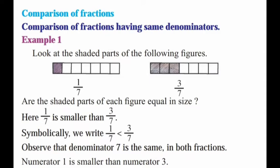Example 1. Look at the shaded parts of the following figures: 1 by 7 and 3 by 7. Are the shaded parts of each figure equal in size? Here, 1 by 7 is smaller than 3 by 7. Symbolically, we write 1 by 7 is less than 3 by 7.